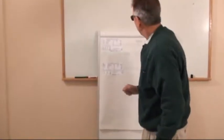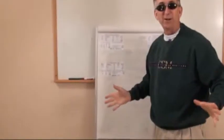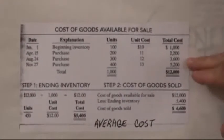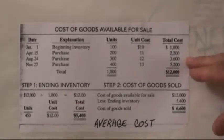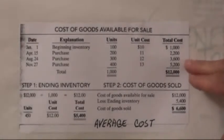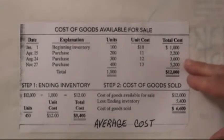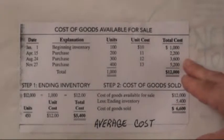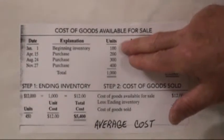Let's continue on with average cost. We use the same set of numbers we've been using for all the other methods. For average cost, we don't have first-in first-out or last-in first-out. To average the cost, we ask: how many units do we have and how much did all those units cost? We simply take the total units and divide that into the total cost.